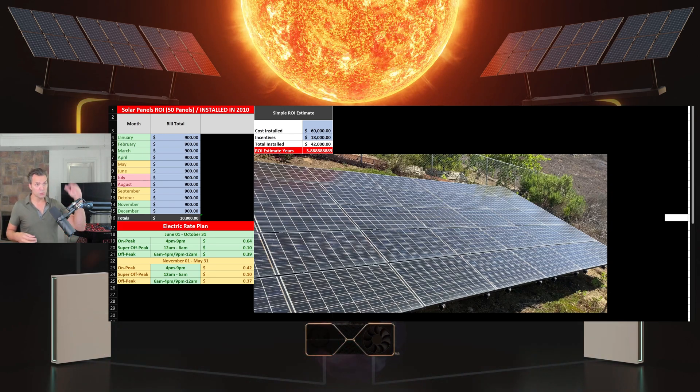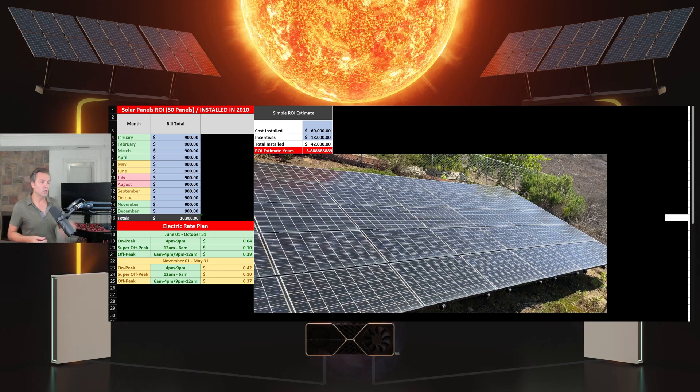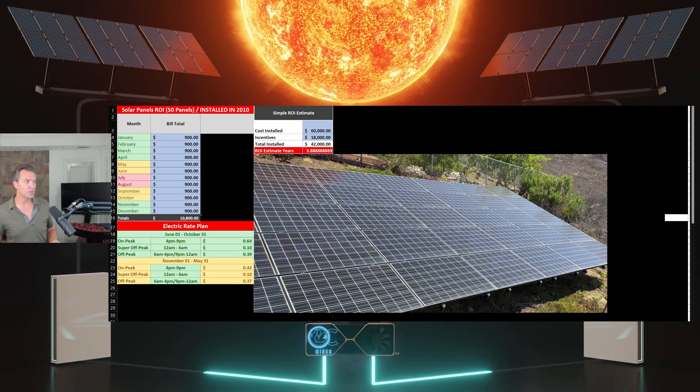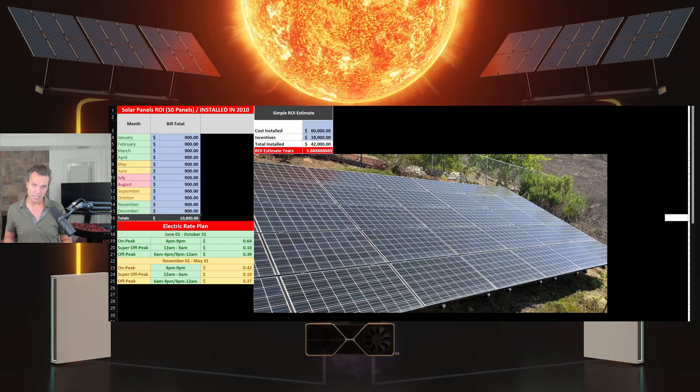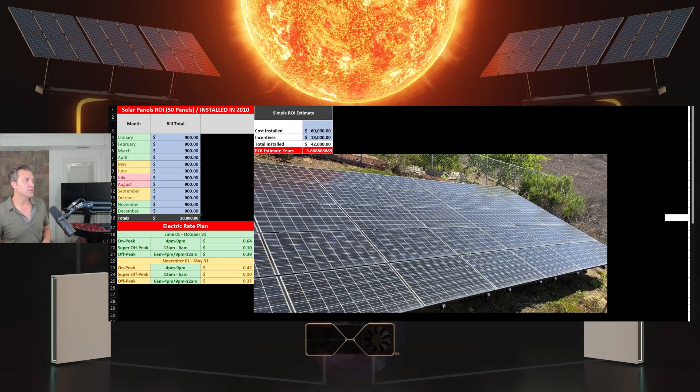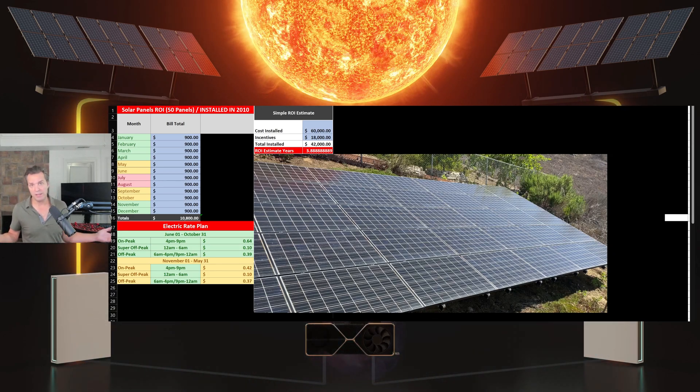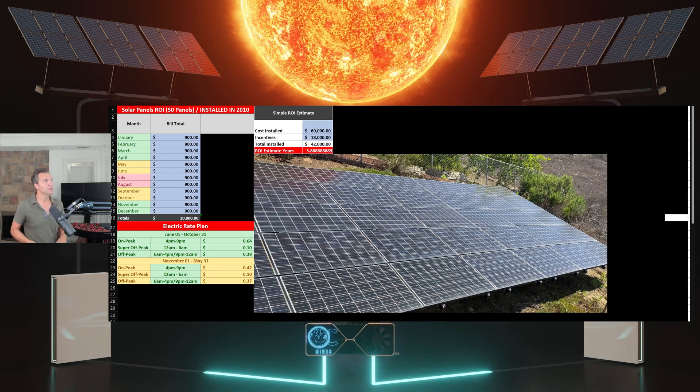So from 2010 to 2014 was obviously me getting my return on investment. So since 2015, it's been pretty much free power. Now in 2012-2013 is when we got our first Tesla and we were able to eliminate the gas bill. So we were not only gaining the fact that we were getting free power, but now we were getting free gas with one of our cars. So the 50 panels, after four years, essentially we had free power and free gas for our car at the time.